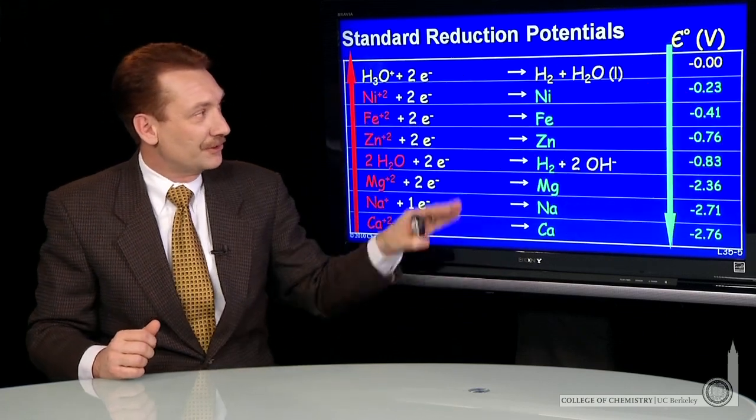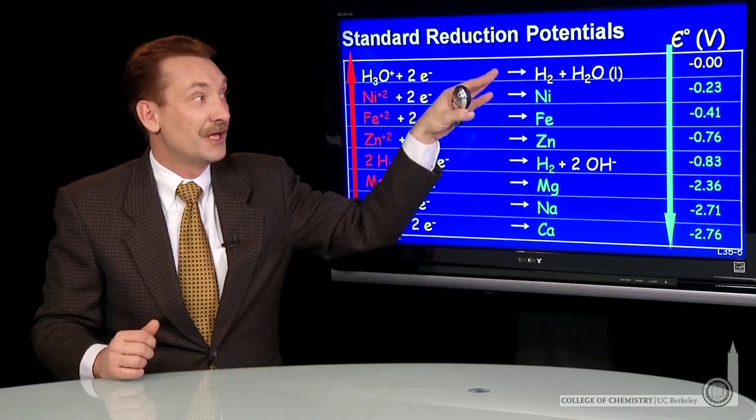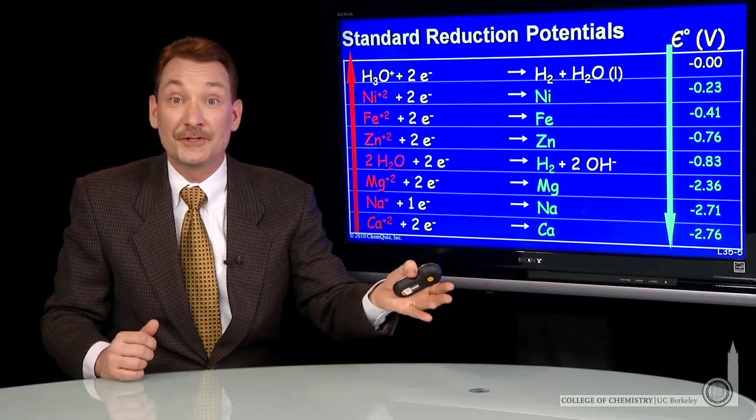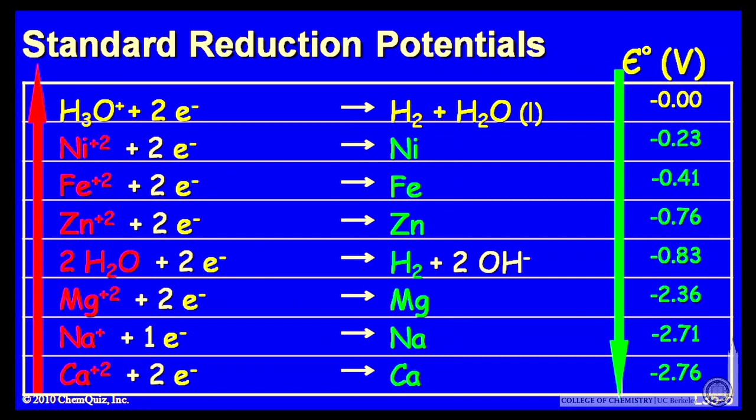Let's look at the lower half of the table. We can also look at those reduction potentials lower than the standard hydrogen electrode. But the same rules apply. We'll have nickel, when it is reduced, able to oxidize those compounds lower.